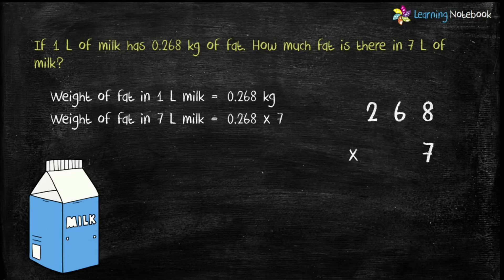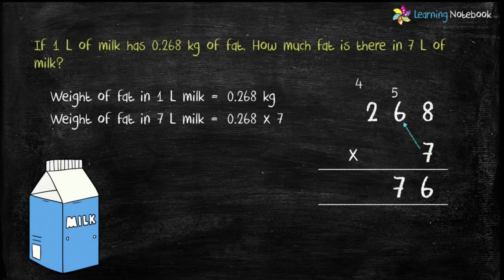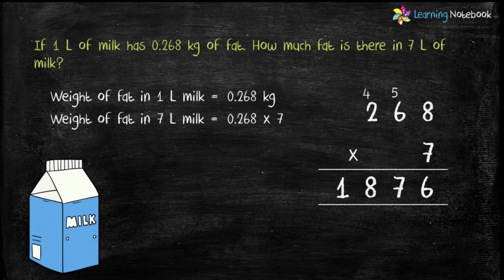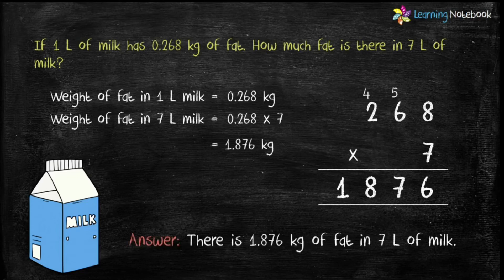Let's first multiply as we multiply whole numbers. 7 into 8 equals 56, carry 5. 7 into 6 equals 42 plus carry 5 equals 47, carry 4. 7 into 2 equals 14 plus carry 4 equals 18. So the answer is 1876. Now let's put the decimal point. The decimal number has 3 decimal places, so the answer will also have 3 decimal places. Therefore the answer is 1.876 kg. Answer statement: there is 1.876 kg of fat in 7 litres of milk.